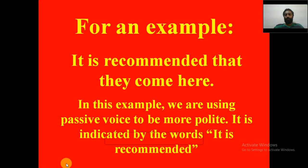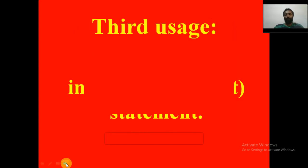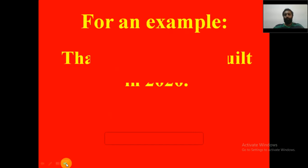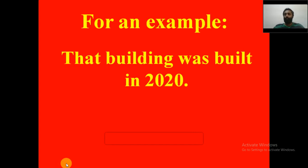Now moving on to the third usage: to make an impersonal statement. Impersonal means very distant — something not directly related to you. For example: 'That building was built in 2020.' We have used the passive voice here to make an impersonal statement.